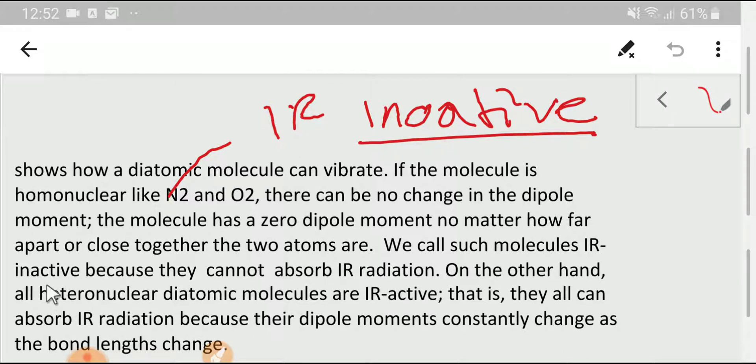We call them IR inactive and they can't absorb IR radiation. So nitrogen and oxygen are IR inactive—that is, they are not greenhouse gases. On the other hand, all heteronuclear diatomic molecules like carbon monoxide are IR active.